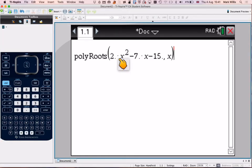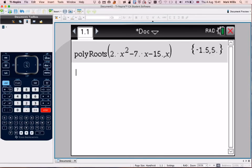2x squared, the dot means multiply, 2x squared minus 7x minus 15, and it's solving it for x. That's the format. Press enter, and we get the two answers: x is equal to minus 1.5, and x is equal to 5.